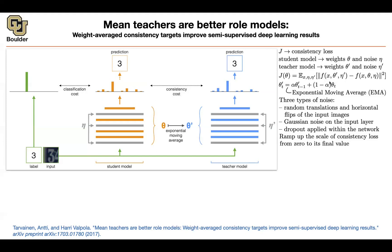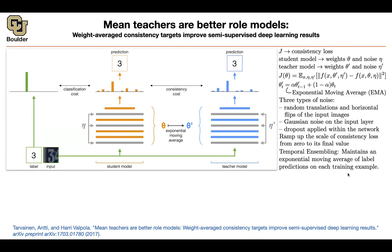Initially you're ignoring this consistency loss, and then gradually you're introducing more and more consistency. This is very similar to a previous paper on temporal ensembling, which is similar to label propagation — rather than maintaining an exponential average of your model parameters, you maintain an exponential average of the label predictions on your training examples. Keep an exponential average of the outcome of the model rather than its parameters. So it's along the same lines.